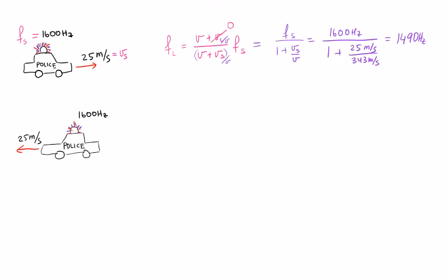Which makes sense, because as the police car moves away, the listener will hear less frequency than the actual siren. So for the second part, where the police car is moving towards the listener, we're going to expect that the listener will hear more.